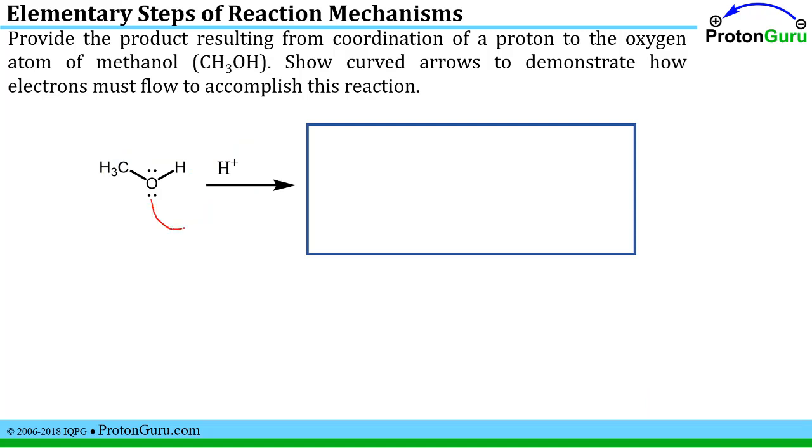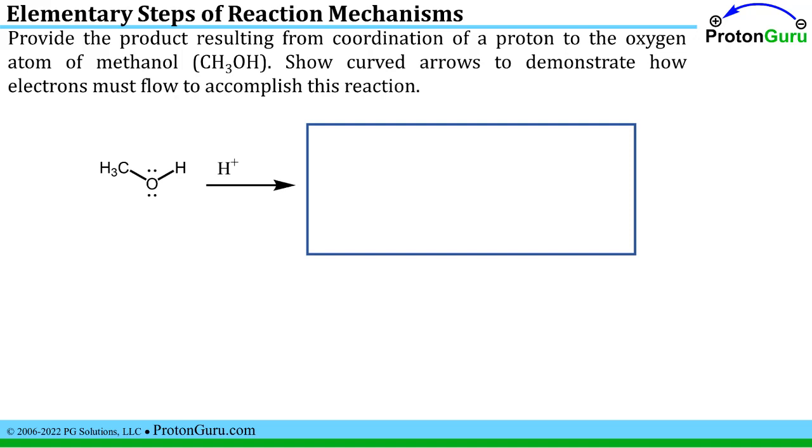Coordination is simply forming a sigma bond, and you're going to take electrons from the lone pair and push them towards the positive charge. We draw the curved arrow, and what product would result from that? We've given electrons to the hydrogen, so this is the new sigma bond we formed, and because the oxygen lost electrons, it's now got a formal charge of plus one.